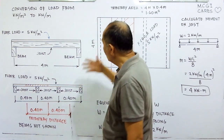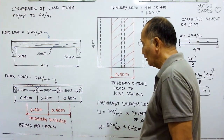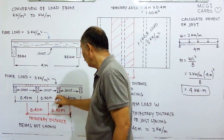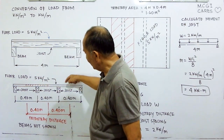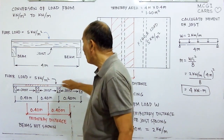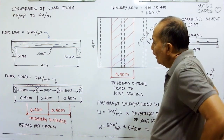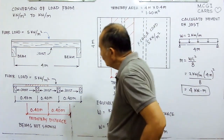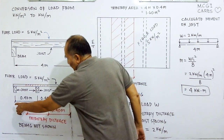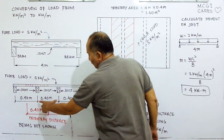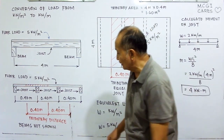Looking at the cross-section, we can see the joists and the slab or floorboard. On top of the floorboard there is a five kilonewton per square meter loading. We want to find the load being carried by a single joist. The center-to-center distance of the joists is 0.4 meter.